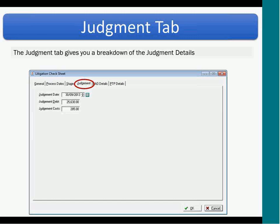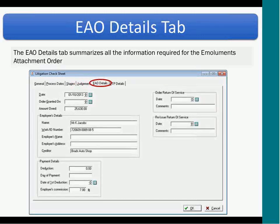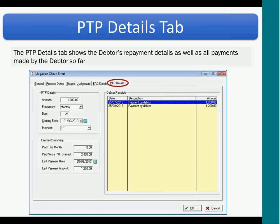The Judgment tab gives you a breakdown of the judgment details. The Emoluments Attachment Details tab summarizes all the information required for the Emoluments Attachment Order. The PTP Details tab shows the debtor's repayment details as well as payments made by the debtor so far. On the right-hand side you've got a nice summary of the screen showing all the payments that have been received to date, and on the left-hand side at the bottom it gives you a good payment summary — you can see how much has been paid this month, paid since the PTP started, the last payment date, and the last payment amount.